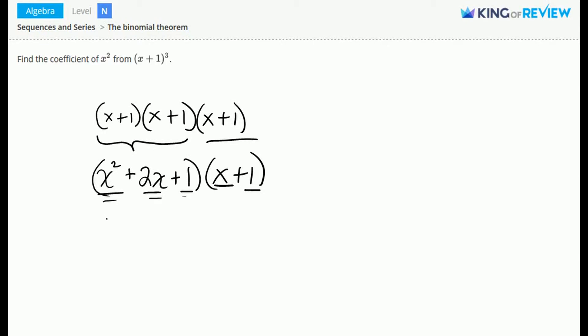So when we multiply this out, we get x³ + 2x² + x. And now multiplying by one for each of these items, we get x² + 2x + 1.